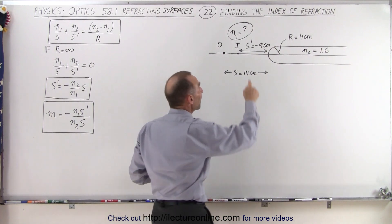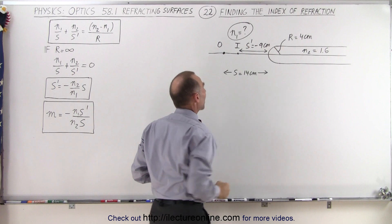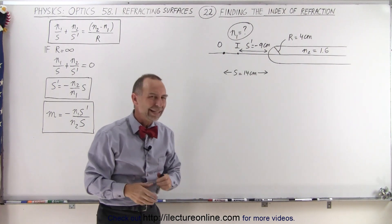Of course, s prime is now going to be minus 9 centimeters because it's on the same side as the object. So what is that index of refraction?